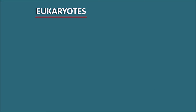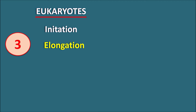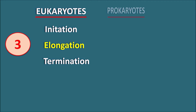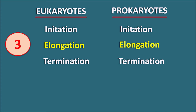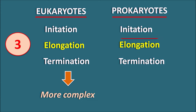Protein synthesis in both eukaryotes and prokaryotes is observed with three steps: initiation, elongation, and termination. However, in eukaryotes the process is somewhat more complex, involving more initiation, elongation, and termination factors compared with prokaryotes. That is why many antibiotics can specifically act on protein synthesis within bacteria, and many drugs are going to affect the elongation process within bacteria.